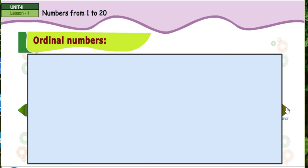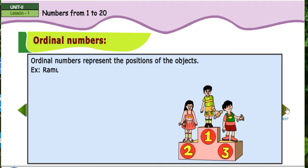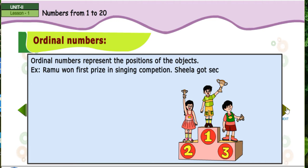Ordinal numbers. Ordinal numbers represent the positions of the objects. Example: Ramu won first prize in singing competition. Sheila got second. John got third.